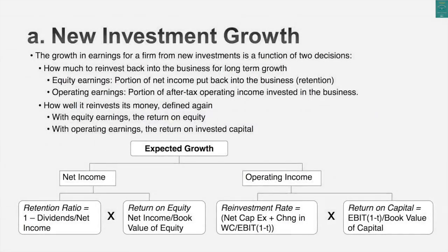In equity earnings and operating earnings — so if you came to me with a company with equity earnings and asked what's the growth rate in the equity earnings going to be in the long term, I'm going to look at the portion of equity earnings, net income, that gets reinvested back in the company. The simplest proxy for that is called the retention ratio. What is the retention ratio? It's whatever you don't pay out. So if you pay out 40% of your earnings as dividends, you've got a 60% retention ratio. The measure of how well you reinvest I'm going to capture with your return on equity. So as an example, if your return on equity is 20% with a retention ratio of 60%, your expected growth in equity earnings is going to be 60% times 20%, which is 12%.